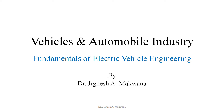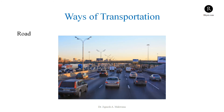Let's discuss vehicles and the automobile industry. There are different ways of transportation. We know road transportation. There are a number of different types of vehicles available — car, truck, bike, buses, as well as heavy vehicles and heavy construction equipment. These all types of vehicles are one type of transportation system that use the road.